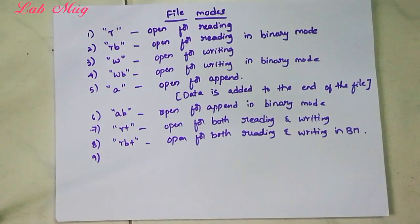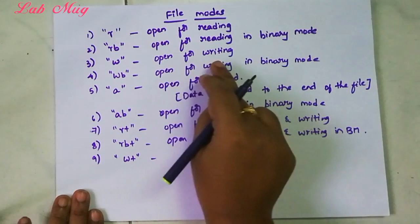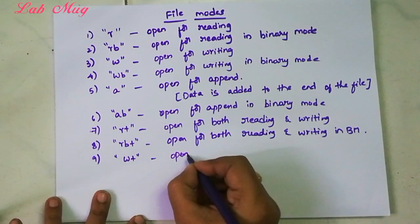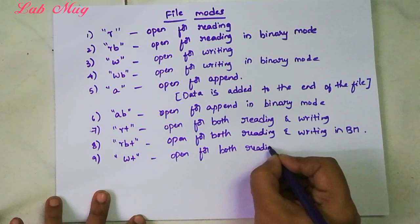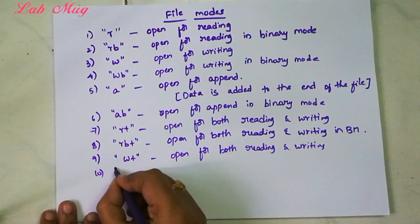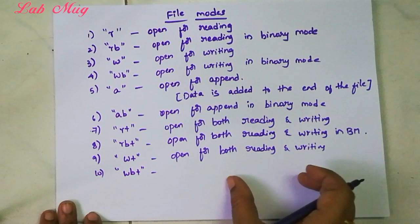Next one from here W plus. Again here W means only writing, but W plus means both reading and writing. Open for both reading and writing. Same again WB plus, that means open for both reading and writing in binary mode.